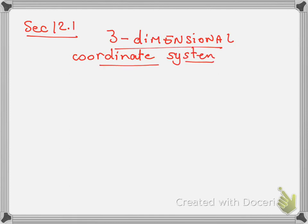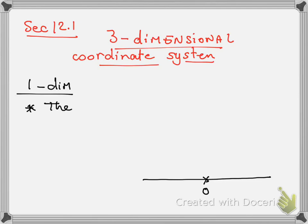First, let me remind you what a one-dimensional coordinate system is. A one-dimensional coordinate system means you have only one axis — you have only the number line, which is your x-axis. On the number line there is of course the origin, which is zero, and you only have one axis: the x-axis.